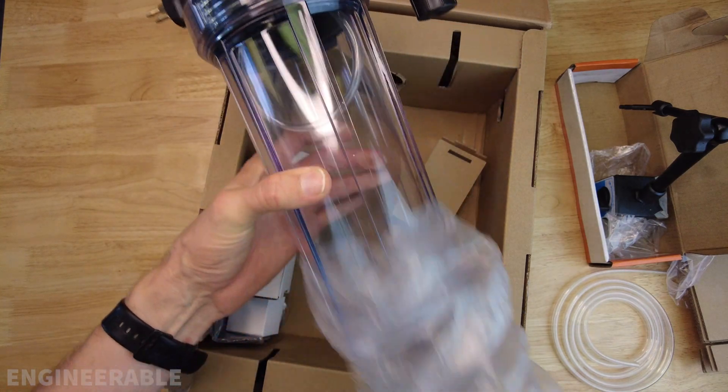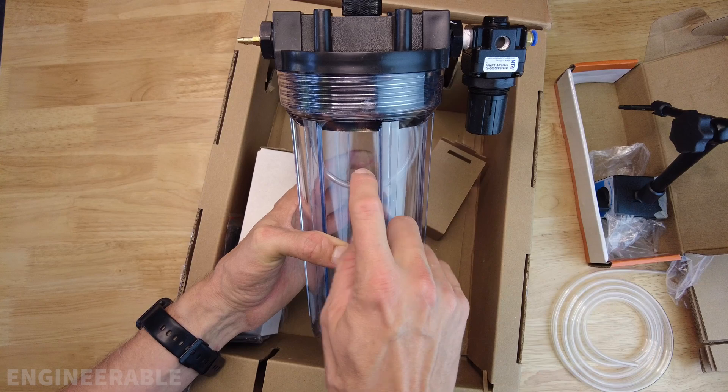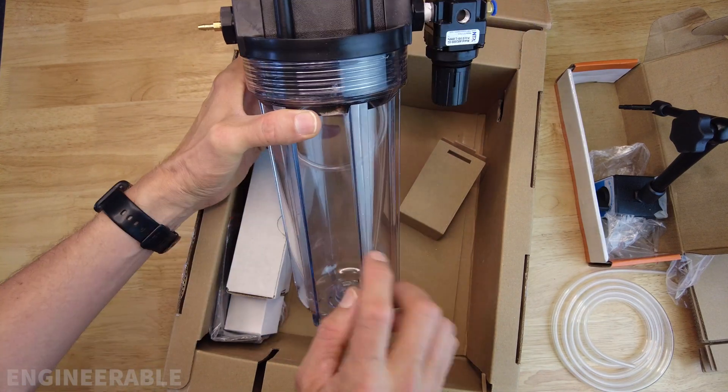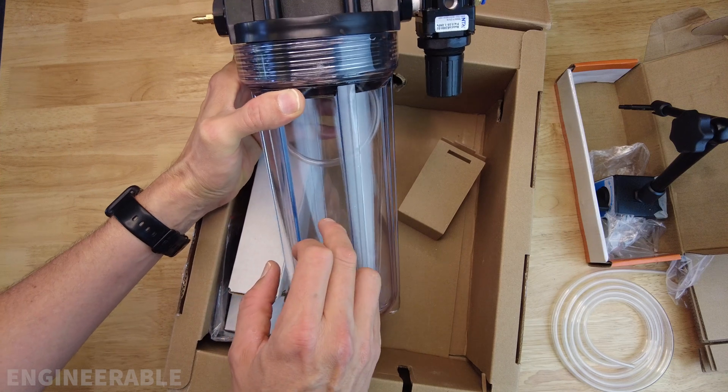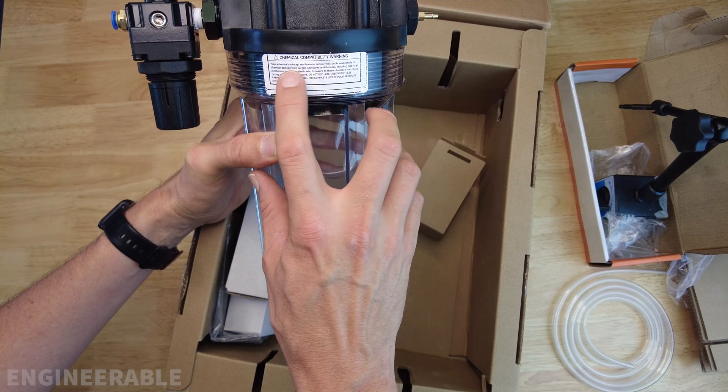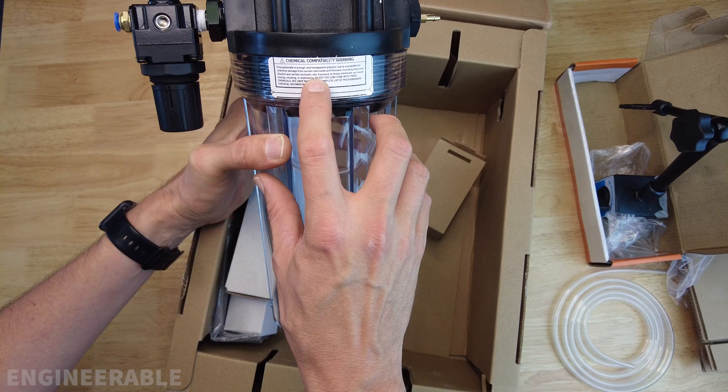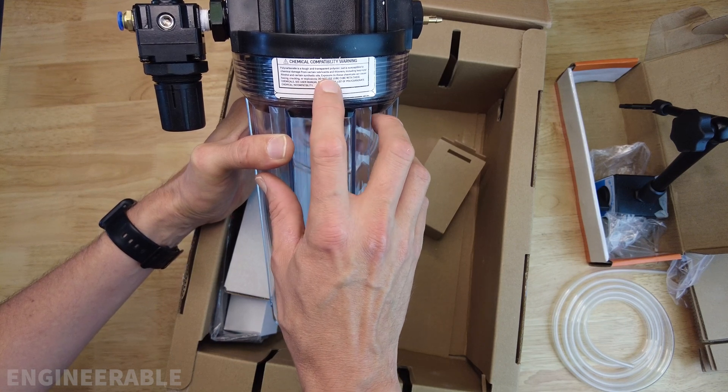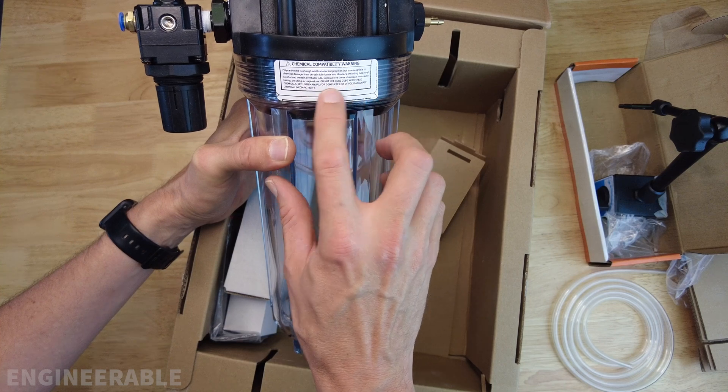There's the coolant tank. Now they specifically say with this coolant tank do not use alcohol because alcohol will damage this plastic and cause it to fracture. Polycarbonate is a tough and transparent polymer susceptible to chemical damage from certain lubricants and thinners including isopropyl alcohol and certain synthetic oils. Exposure to these chemicals can cause hazing, cracking, or explosions. Do not use the lube cube with these chemicals.